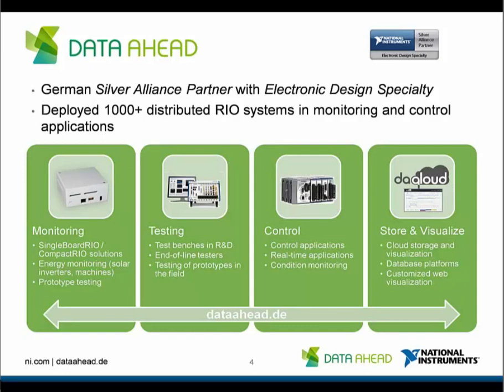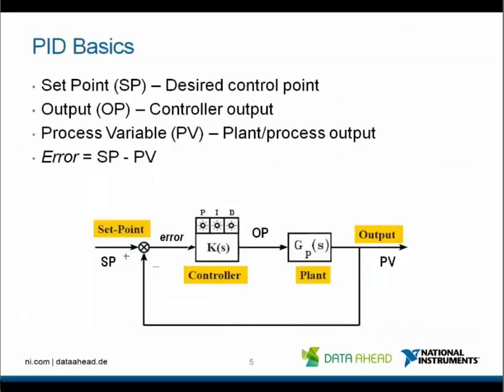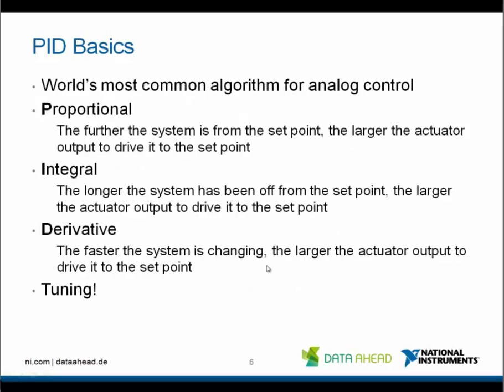I'm going to go more deeply into control applications and the PID, starting with the basics. Here we see a closed loop control system. The set point is the desired control point and the output is the controller output. The process variable is the output of the plant or the process, and the error is set point minus the process variable. When we talk about the PID, we talk about the world's most common algorithm for analog control, and it consists of three parts that are each controllers by themselves.